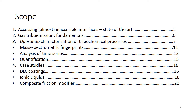This presentation will consist of four main parts. In the first part, I will briefly explain the state of the art in accessing almost inaccessible interfaces. In the second part, I will talk about gas triboemission fundamentals. In the third part, I will discuss operando characterization of tribochemical processes using mass spectrometry. Finally, I will show case studies applying this methodology to DLC coatings, ionic liquids, and composite friction modifiers.